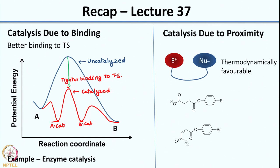The catalyst also forms a tight coordination with the transition state, so you see a lowering in energy. This leads to rate enhancement. It is very important that it needs to have better binding to the transition state. Then you have the product which is again bound to the catalyst, and finally you have your product and the catalyst is released.